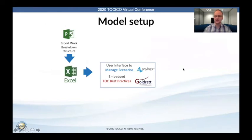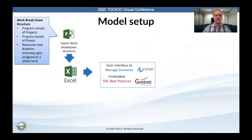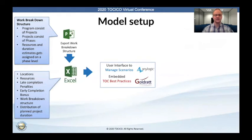The model architecture is actually quite simple. The model setup involves taking an export from your project management system, like Microsoft Project, and importing that into an Excel document. Your work breakdown structure will consist of programs, the projects that make up these programs, and the phases that make up the projects, along with resource allocations, durations, and estimates. In order to add variability to the simulation, we asked the project managers for the additional data required: locations, which projects are location-dependent, the resources at specific locations, penalties for late completions, bonuses for early completions, as well as the distribution of project durations.